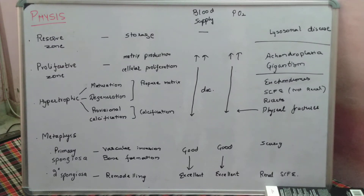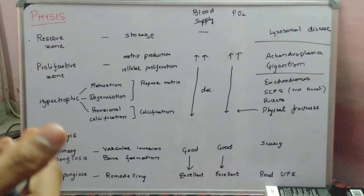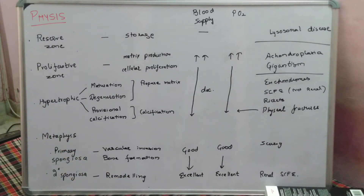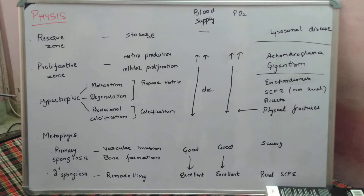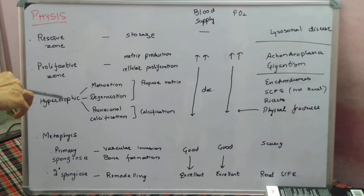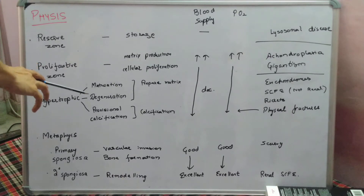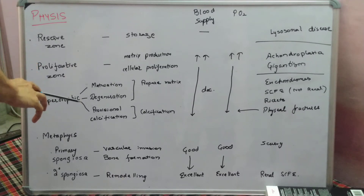In this video we will study about the various zones of the physis and the various types of ossification in our body. Starting with the anatomy of the physis, there are broadly three zones: the reserve zone, the proliferative zone, and the hypertrophic zone. The hypertrophic zone is further divided into three sub-zones: the zone of maturation, zone of degeneration, and provisional calcification.